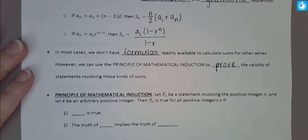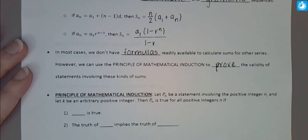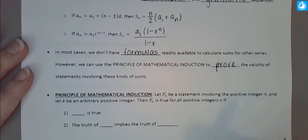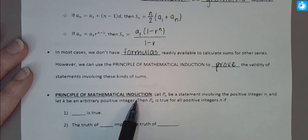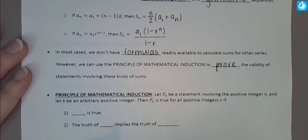What the principle of mathematical induction does for us is allow us to take a proposed formula and verify that it is in fact true — that it does represent such a sum in a concise manner. We're going to let P sub n be a statement involving the positive integer n. A statement can mean a variety of things: it could be a sentence related to positive integers, or an algebraic equation. It's some relationship we want to prove the validity of. We also let k be an arbitrary positive integer.